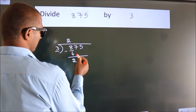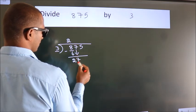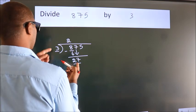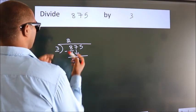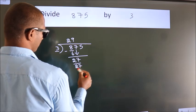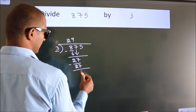After this, bring down the beside number, so 7 down, so 27. When do we get 27? In 3 table, 3 9s, 27. Now we subtract, we get 0.